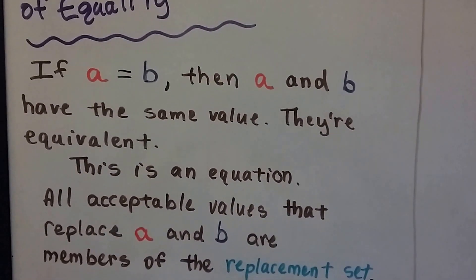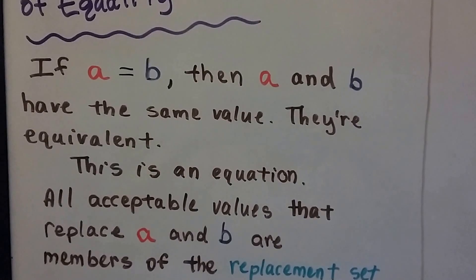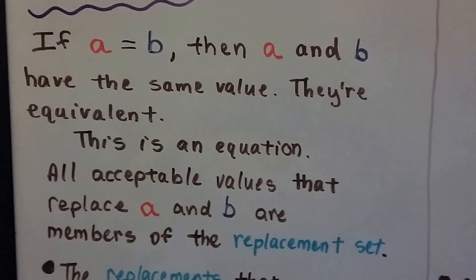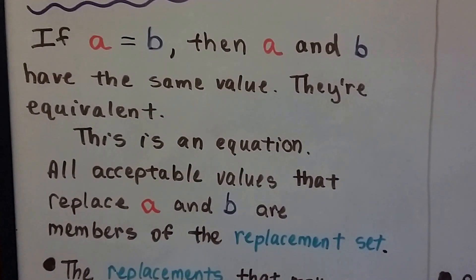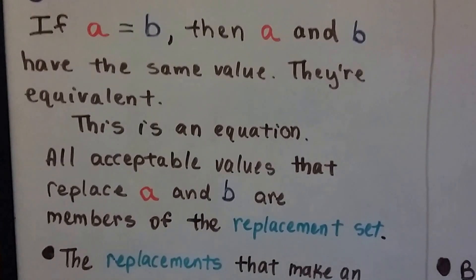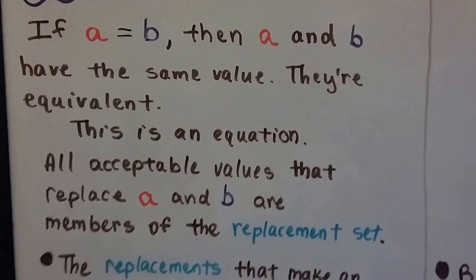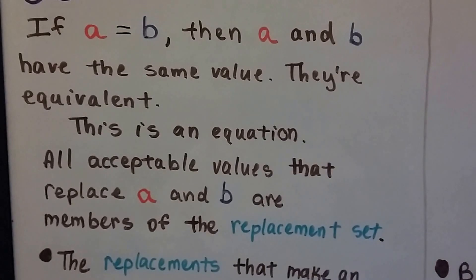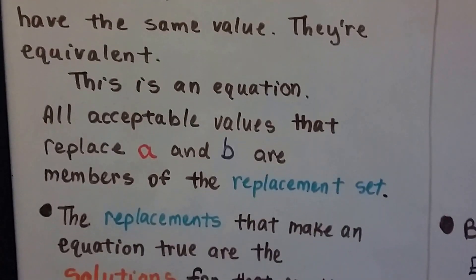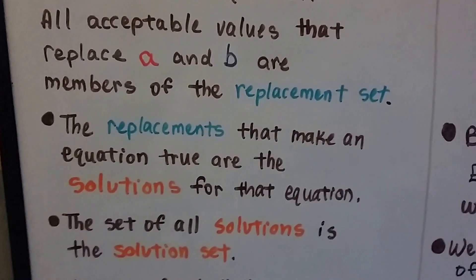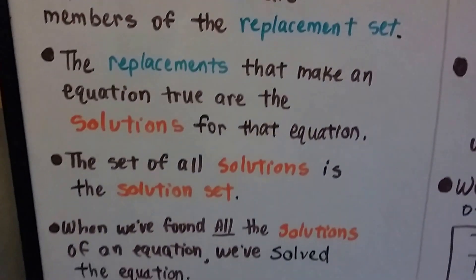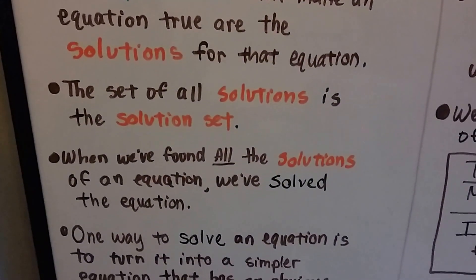If a is equal to b, then a and b have the same value — they're equal, they're the same number, they're equivalent. This is an equation; they're balanced on each side. Whatever a is, is what b is. They could both be 2, they could both be negative 10.